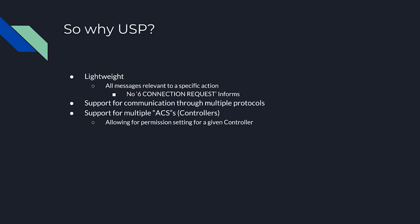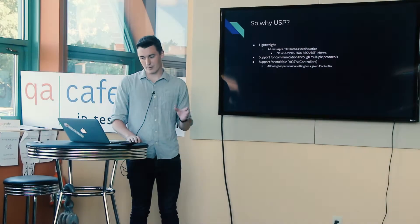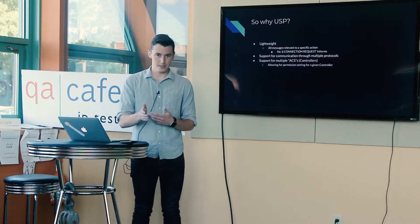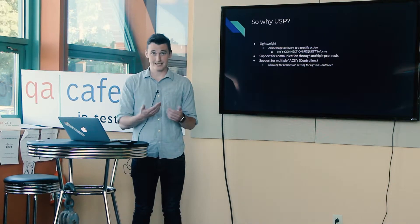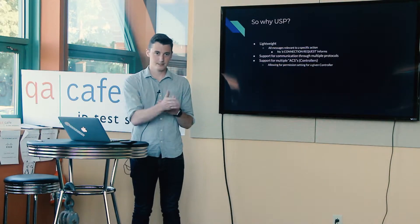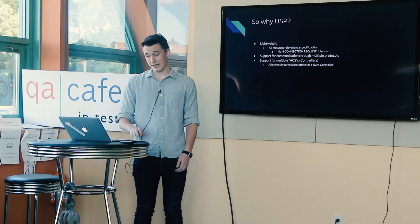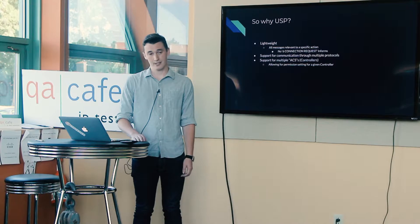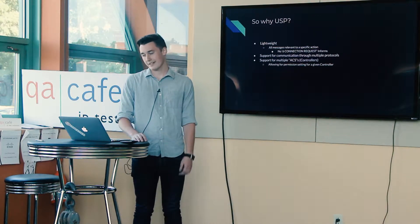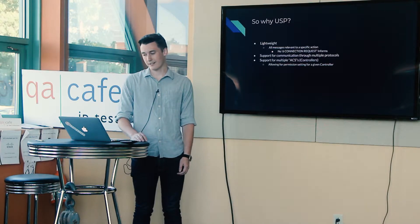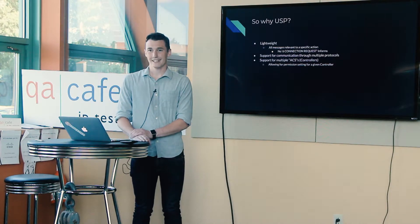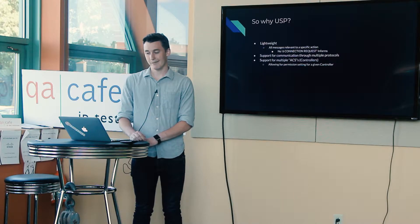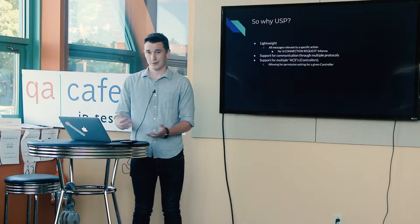So why USP? One of the main things is it's lightweight. There's no big connection requests — all the messages exchanged are very specific to what is happening. The connection request in TR69 involves a handshake back and forth before you get a session where you actually do what you want. But in USP, there's just: give me that value. They also wanted support for multiple protocols — in TR69 everything runs over HTTP, which might not be the best choice for some things. And there's this idea of multiple controllers: you can easily imagine a couple of people in your house wanting to control a smart light bulb, not just one central hub.